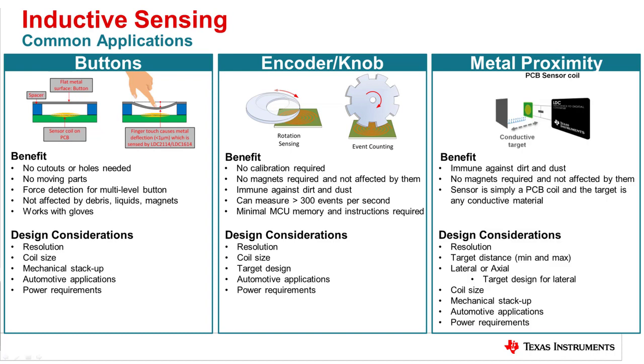The last common application seen in inductive technology is metal proximity sensing. This follows the same principle as button application for an axial target design, but a lateral target design requires some attention to the target design similar to the rotational sensing application. For axial designs, one thing to consider is the minimum and maximum distances for the target.